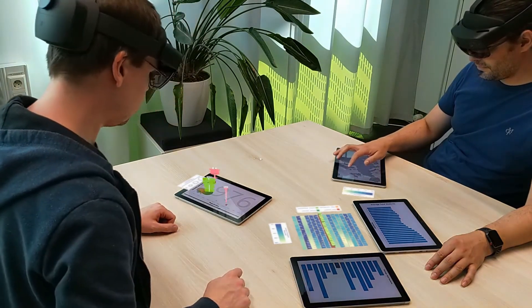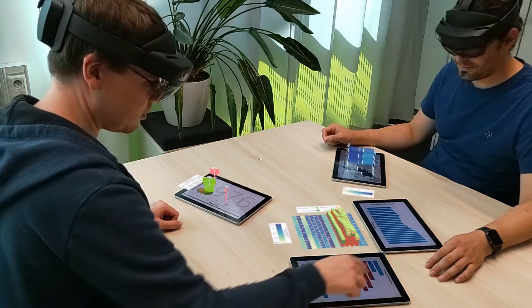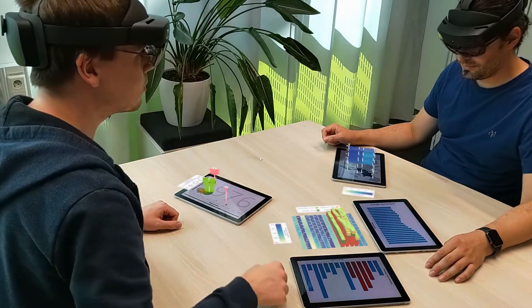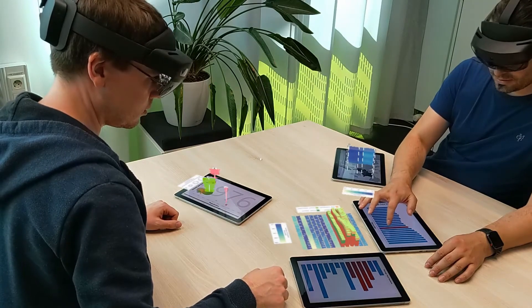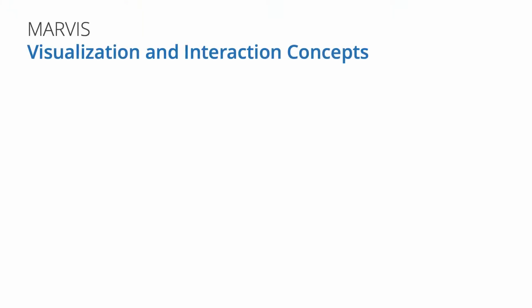The basic idea is to use AR to extend mobile device visualizations by providing additional 2D and 3D information around, above, and even between devices. As one of the core parts of our work, we present several visualization and interaction concepts organized into two categories.